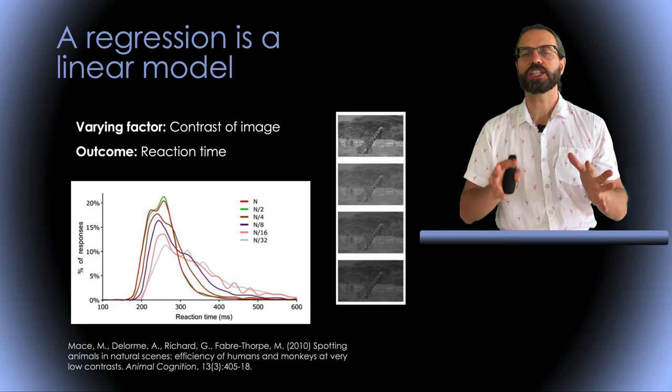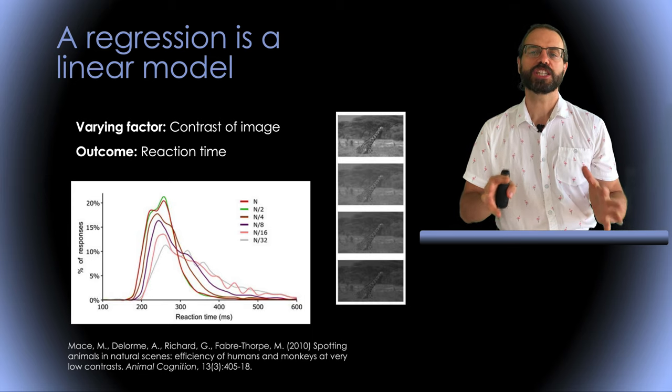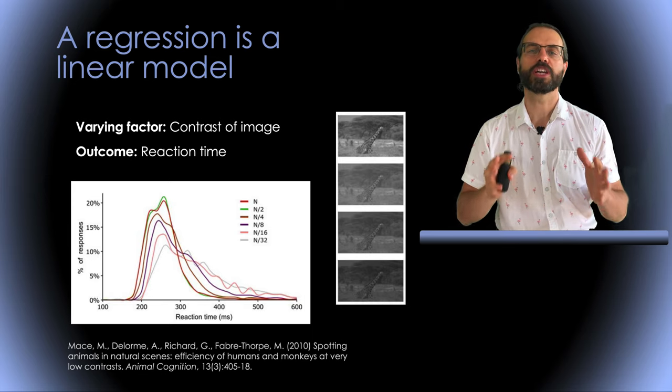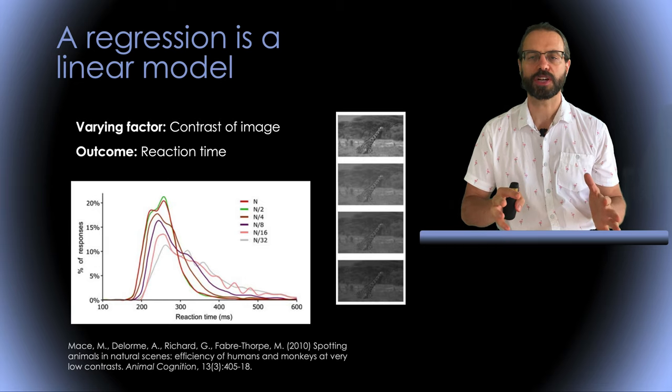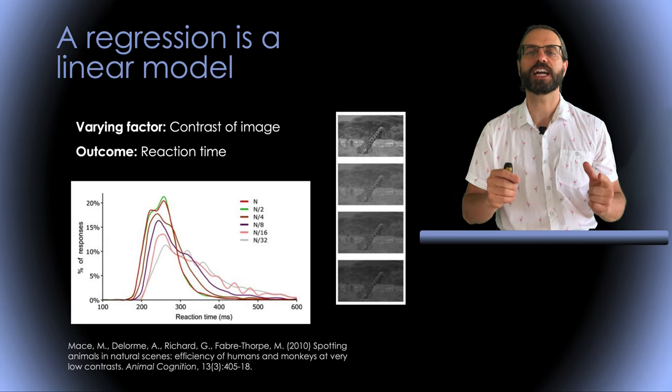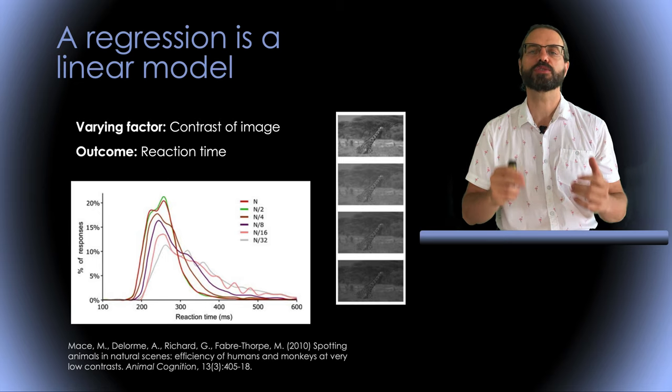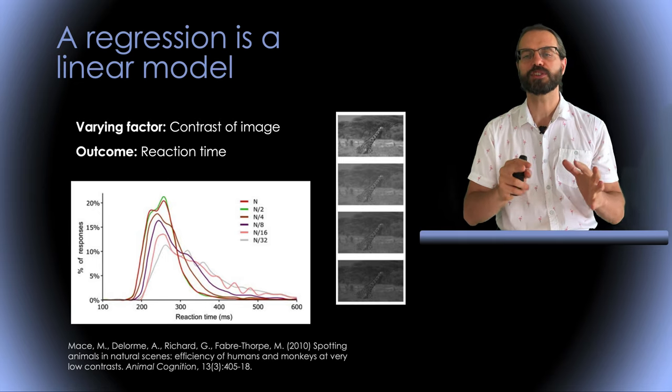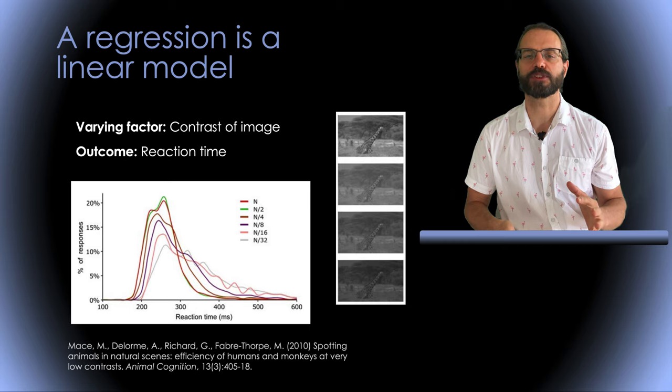So first, a regression is a linear model. Imagine a psychophysics experiment where images with different contrasts are presented and we ask participants to press a button whenever they see an animal. This is actually an experiment we've done and this is the histogram of reaction time for different levels of contrast.